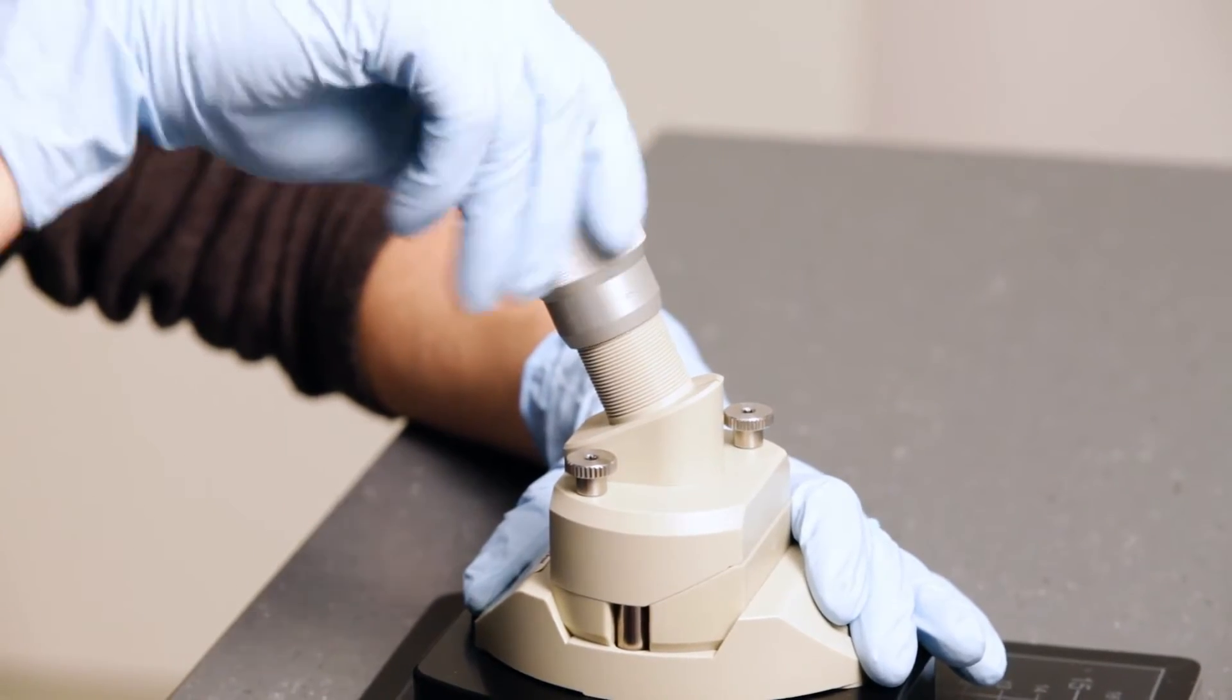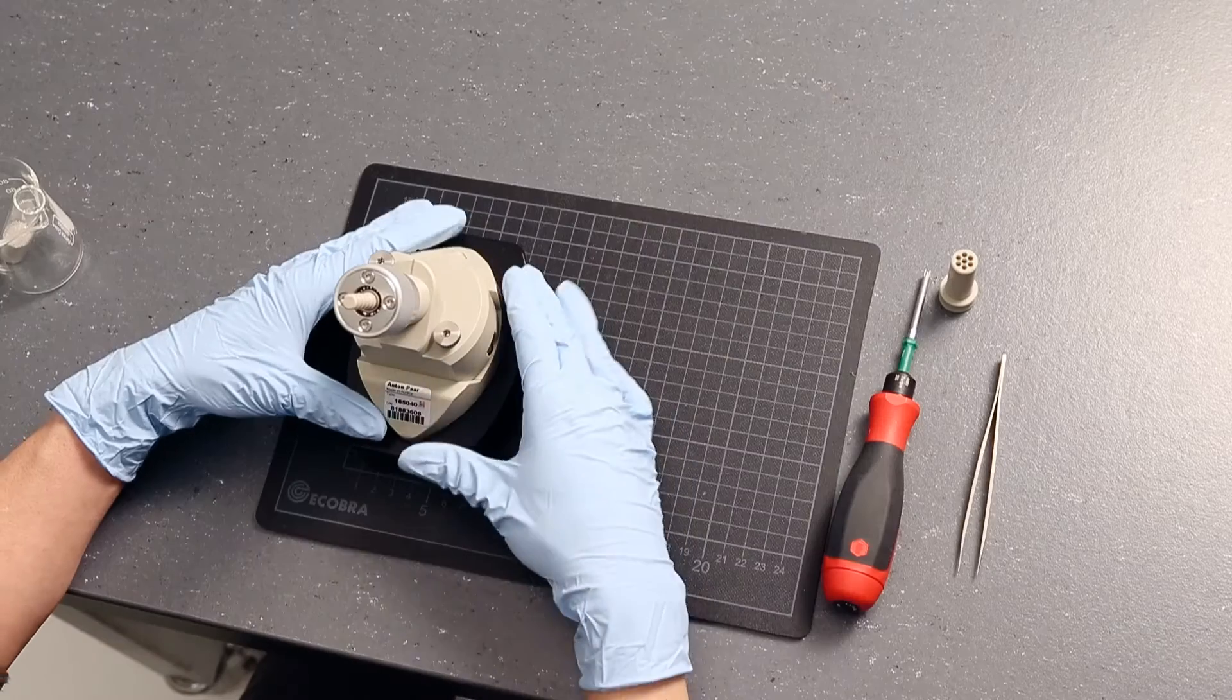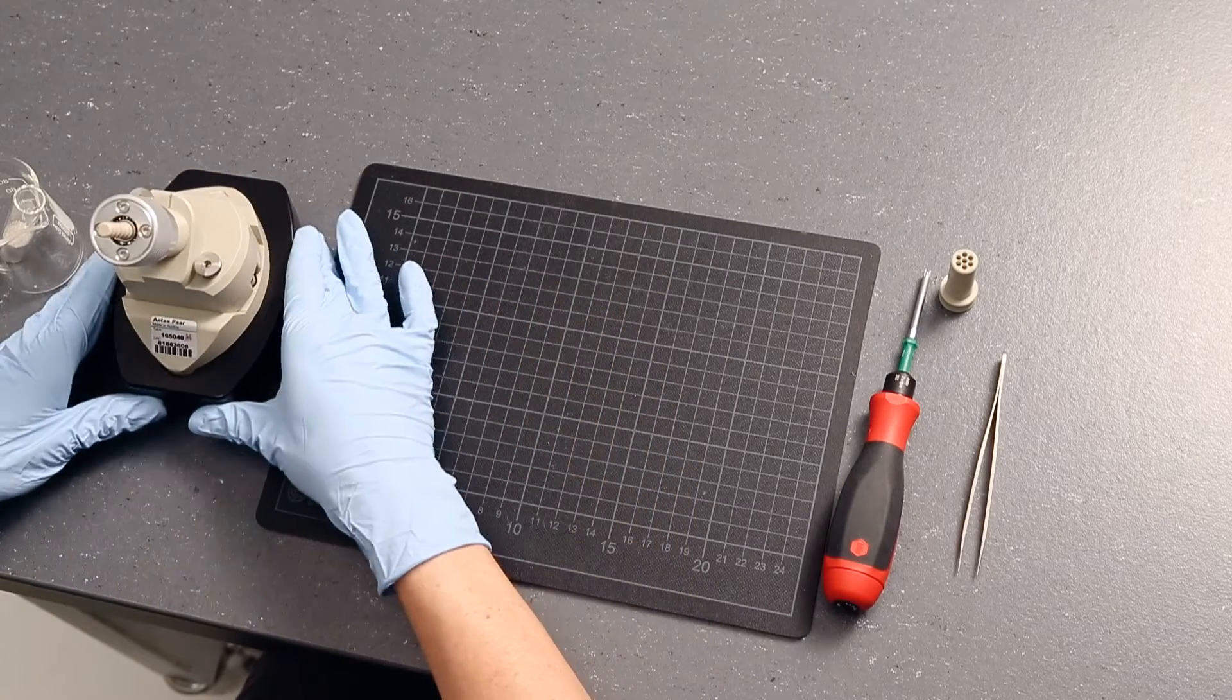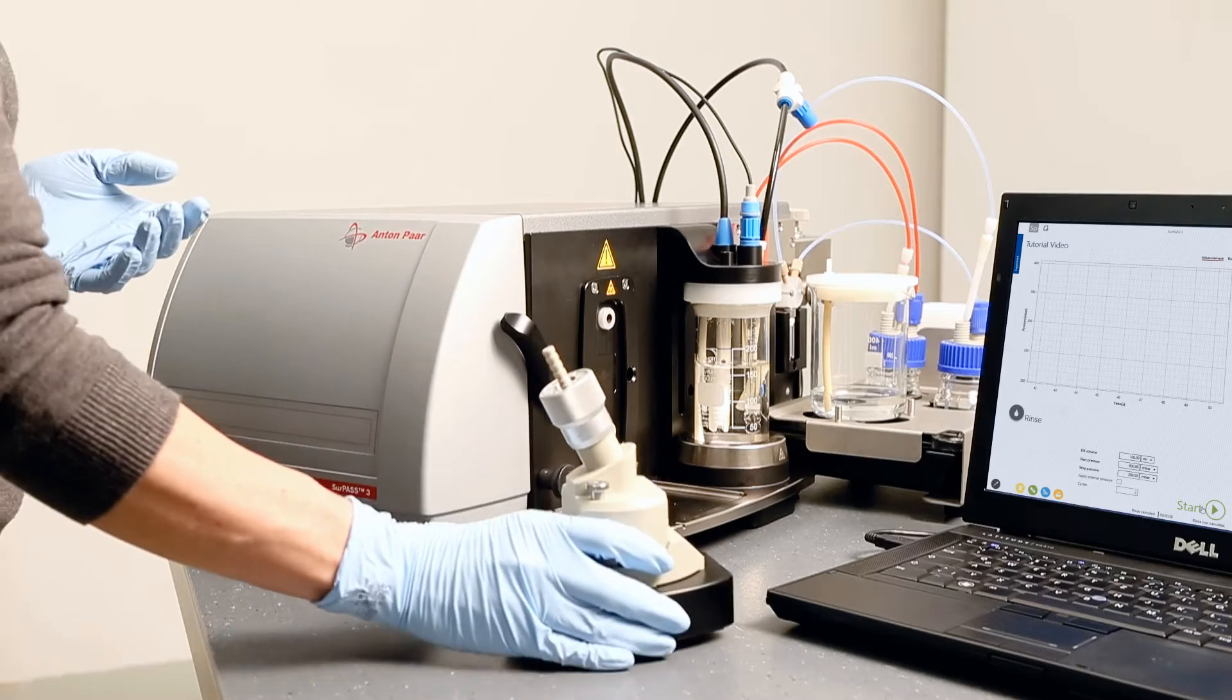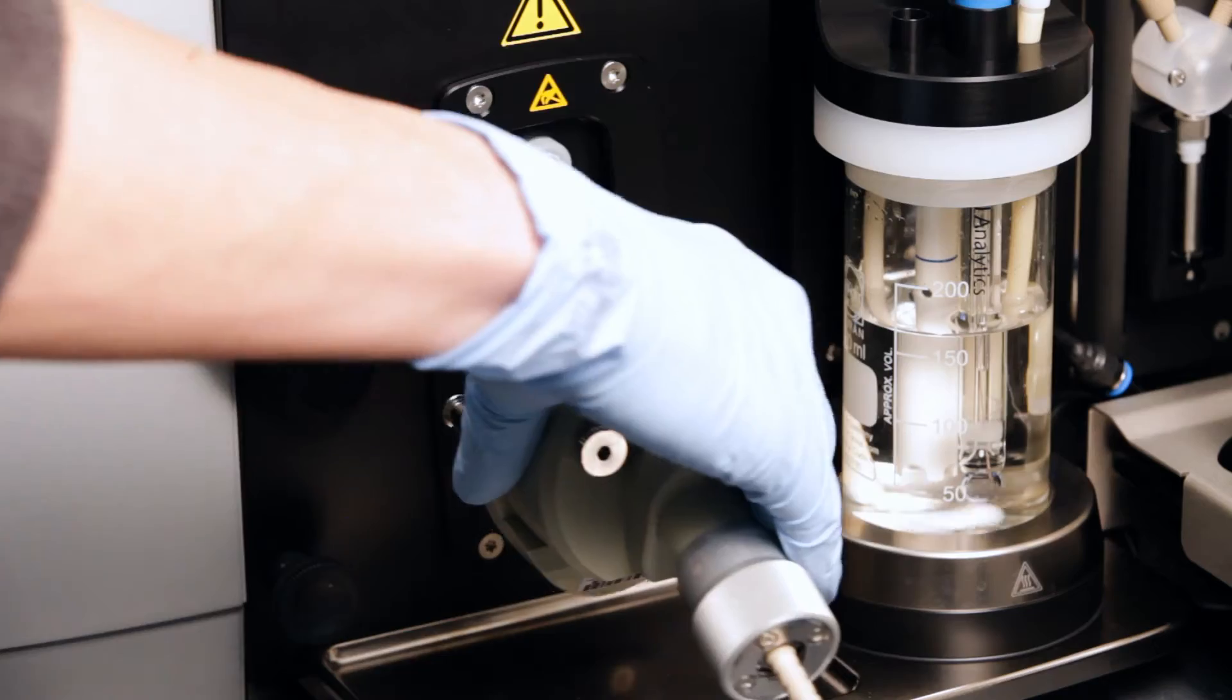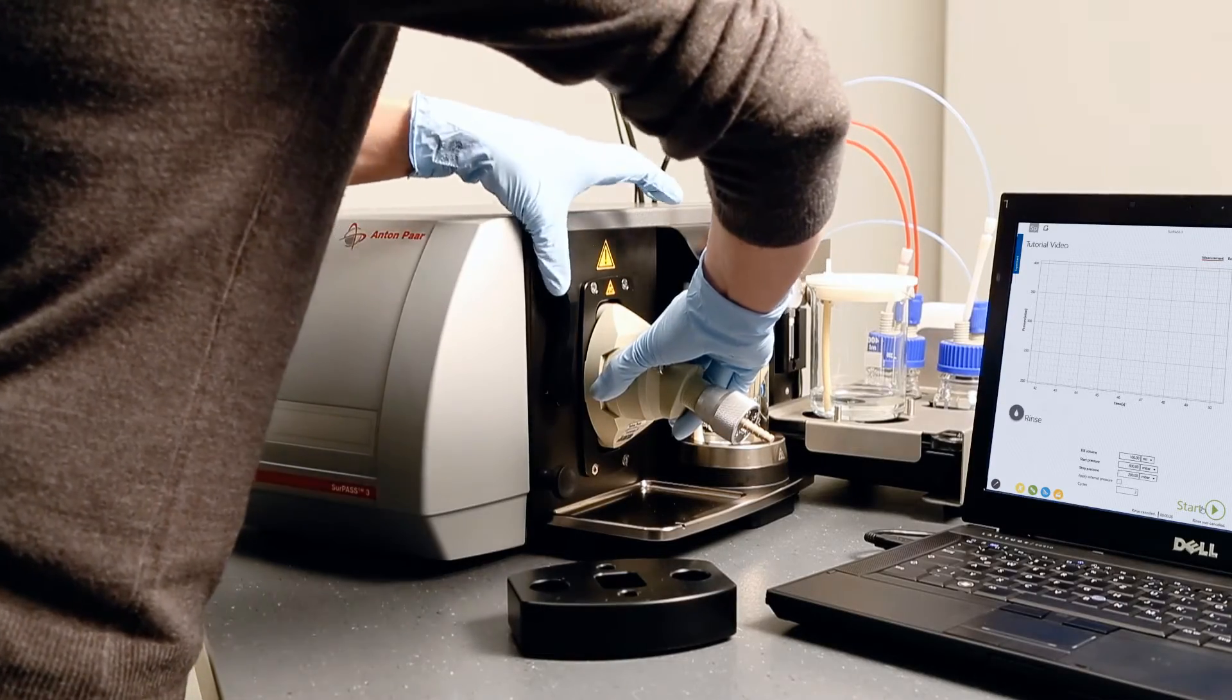Mount the adjustment knob. Now you can mount the measuring cell on the instrument. Simply plug in the cell and lock it by turning the lever to an upright position.